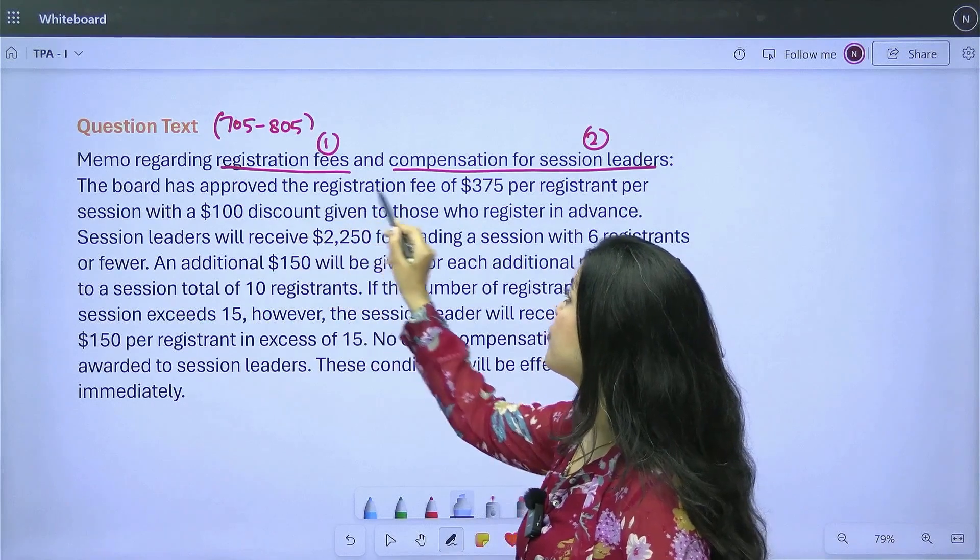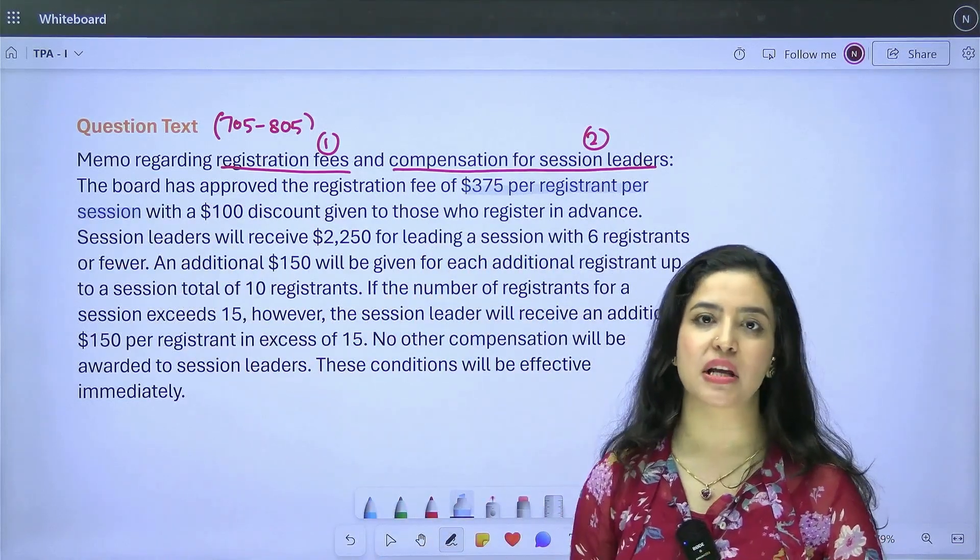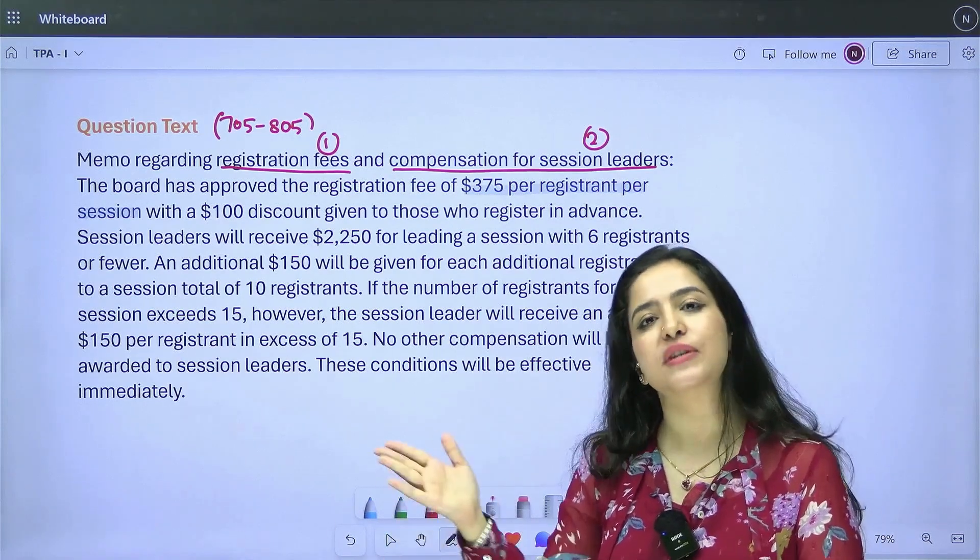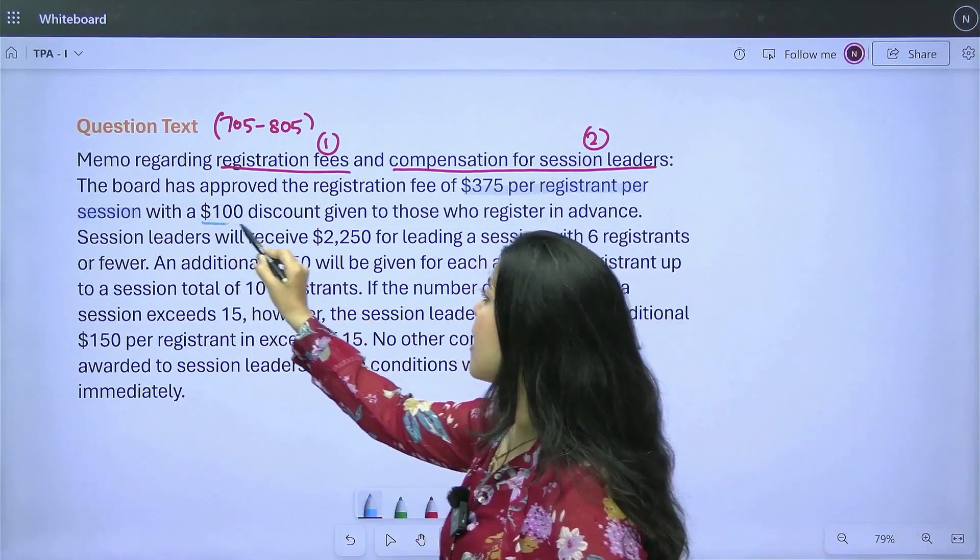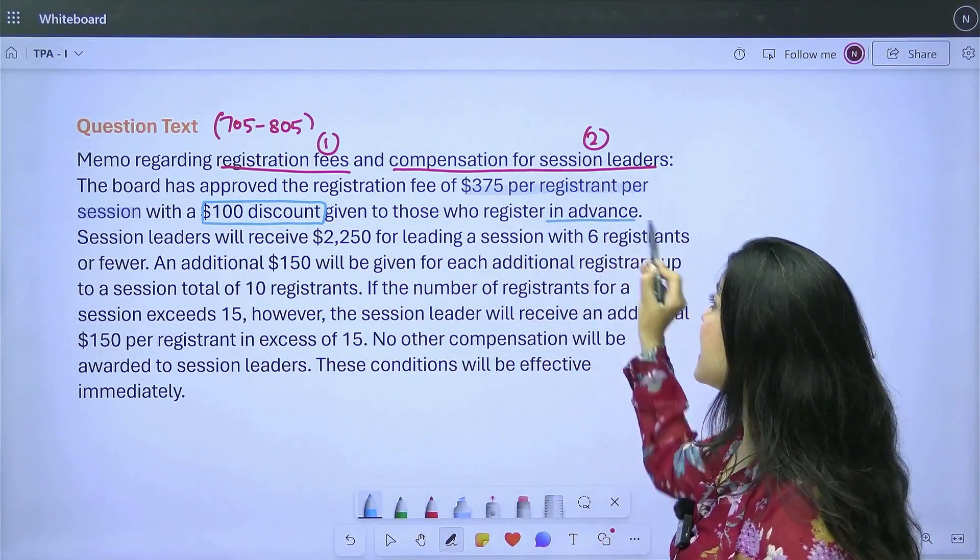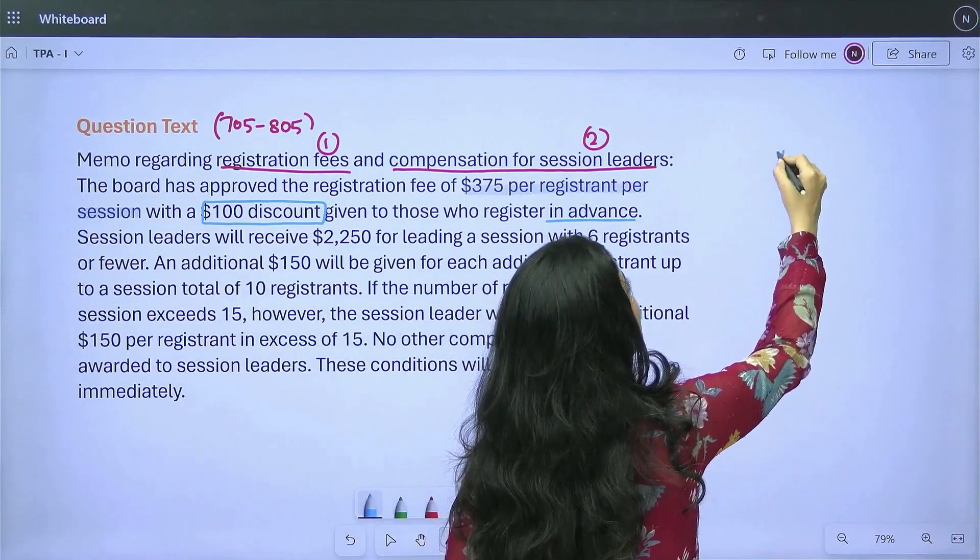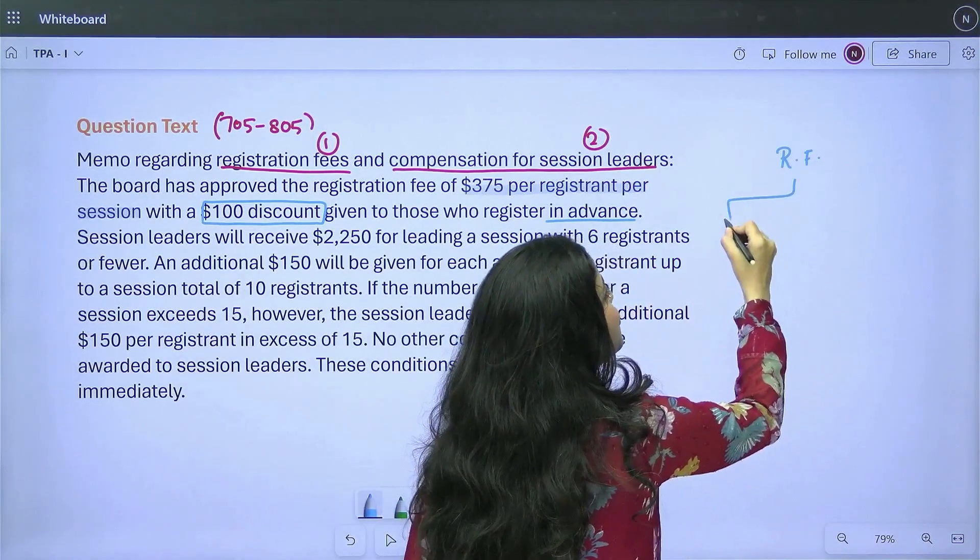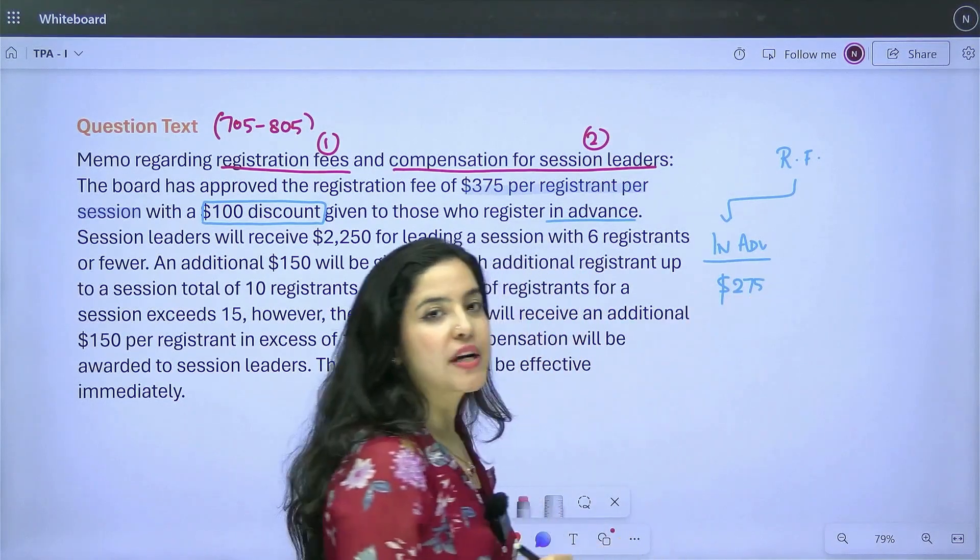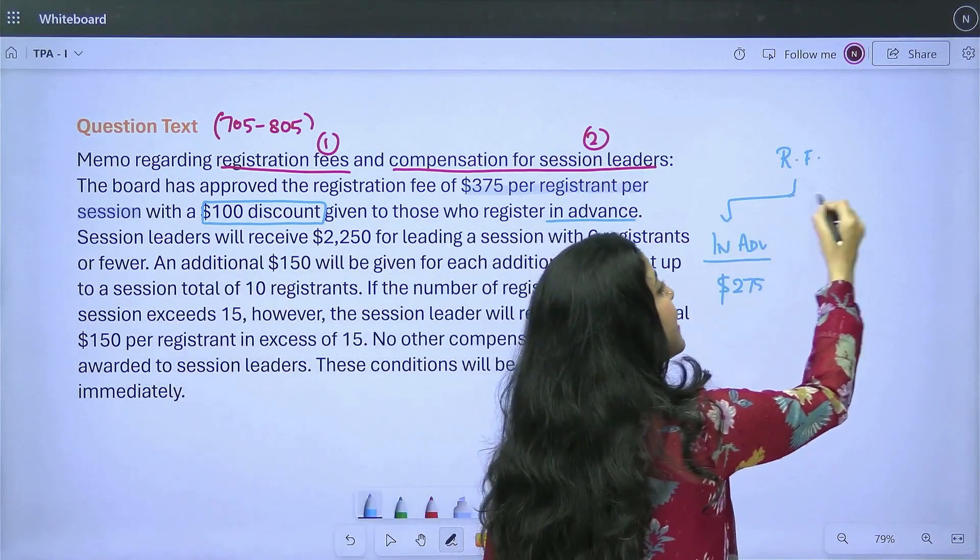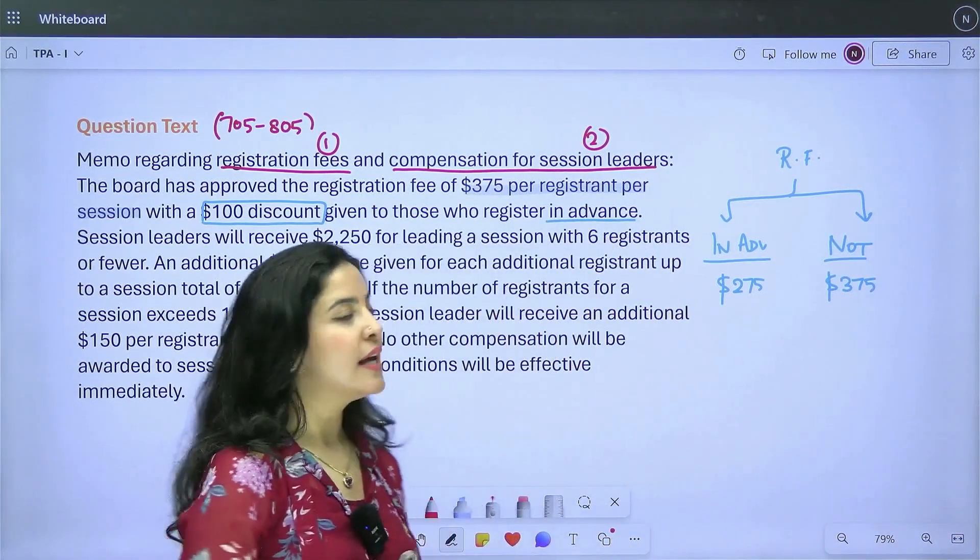The board has approved registration fee of $375 per registrant per session, which means if I register for this session, for one session, then I will have to pay $375. If two people register, then $375 times two because it's per registrant and per session, just one session. But then it goes on further. It says there is a $100 discount also given to those who register in advance, which means your registration fees is not really fixed. It depends on when you register. So with this, let me write down more about this. Let's just call registration fees RF. I find two situations. One, if I book this in advance, then I'm paying a smaller amount. A $100 discount means I'm going to pay $275 in this situation. But on the other hand, if I do not do that, not in advance, then I'm going to pay the full $375.